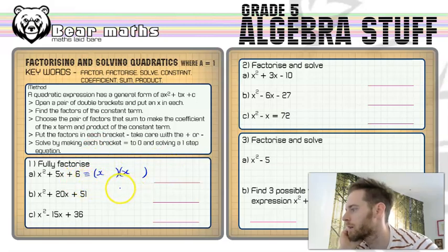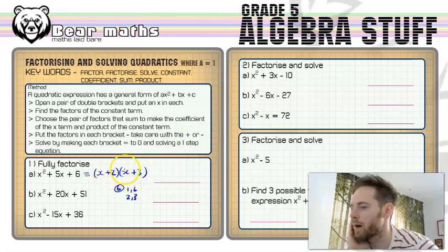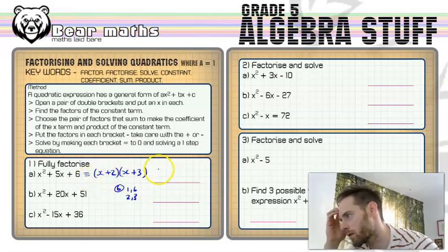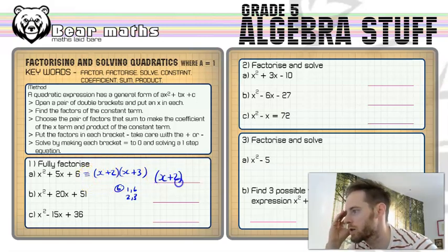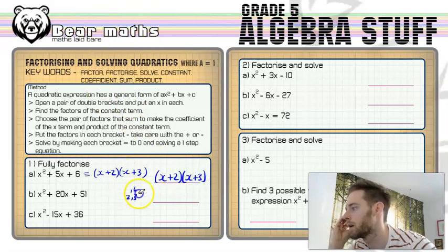So I'm going to open up my double brackets. I'm going to put an x in one and x in the other. I'm going to find the factors of the constant term. So the factors of 6 are 1 and 6, 2 and 3. Now what pair of those add up to make the number that's in front of x? So 2 and 3, plus 2, plus 3. Pop them in the brackets. It doesn't matter which way around they go. That's it. We've factorised that particular quadratic expression. I'll just write that answer there in the answer space.